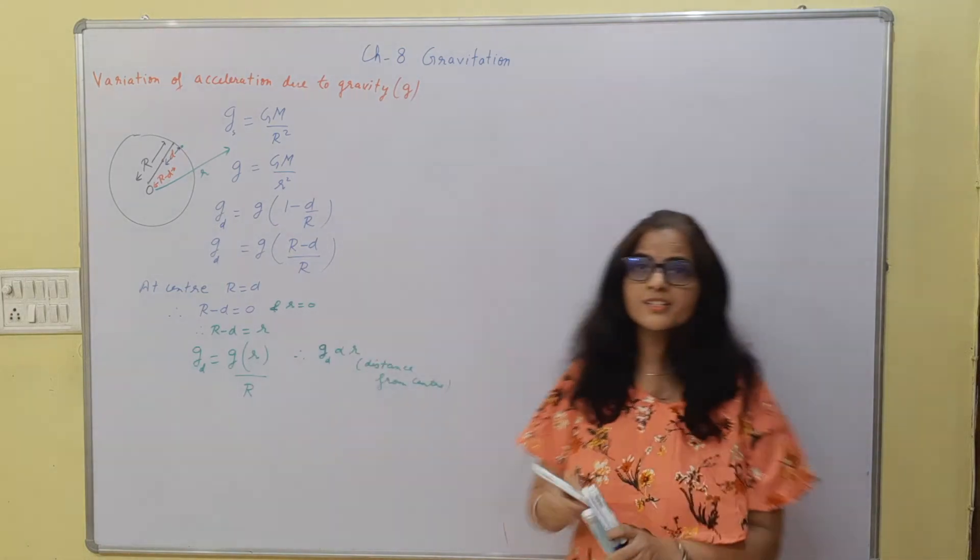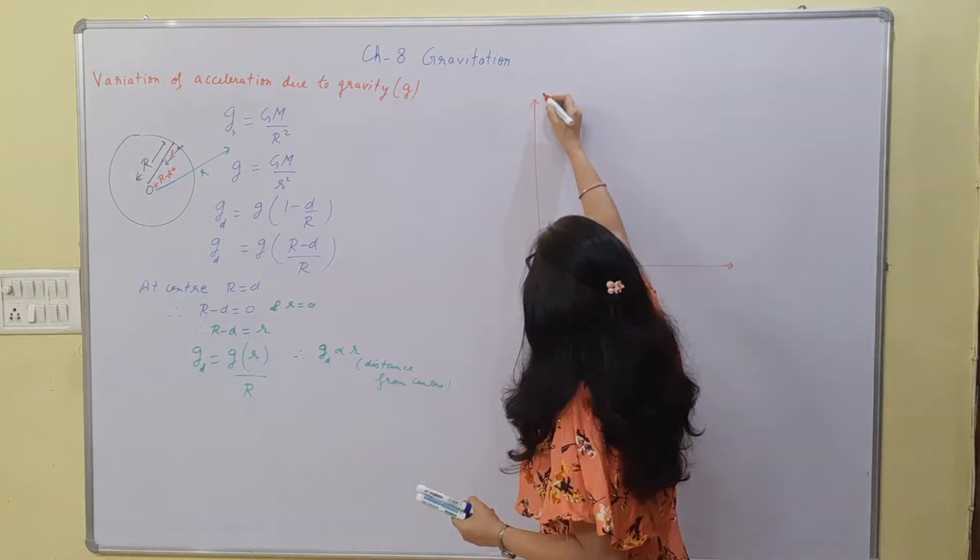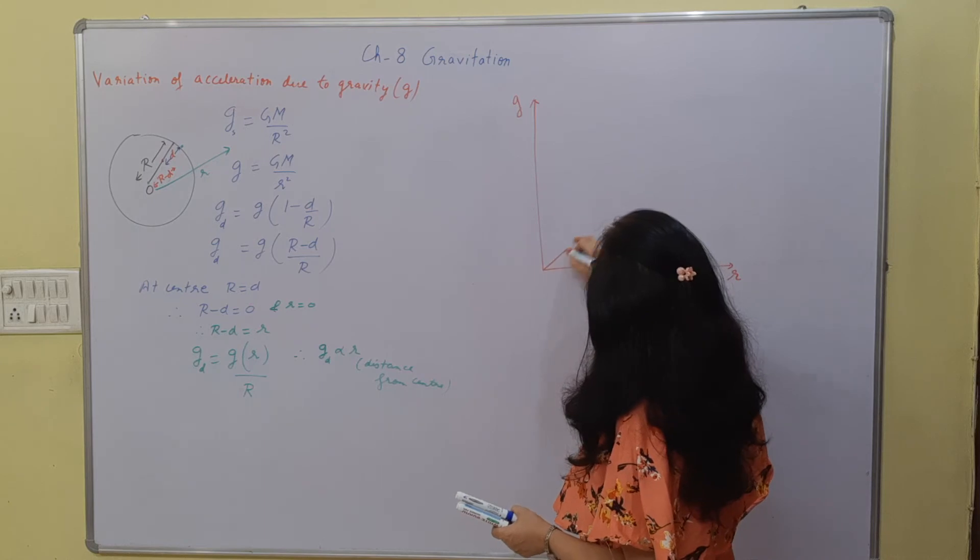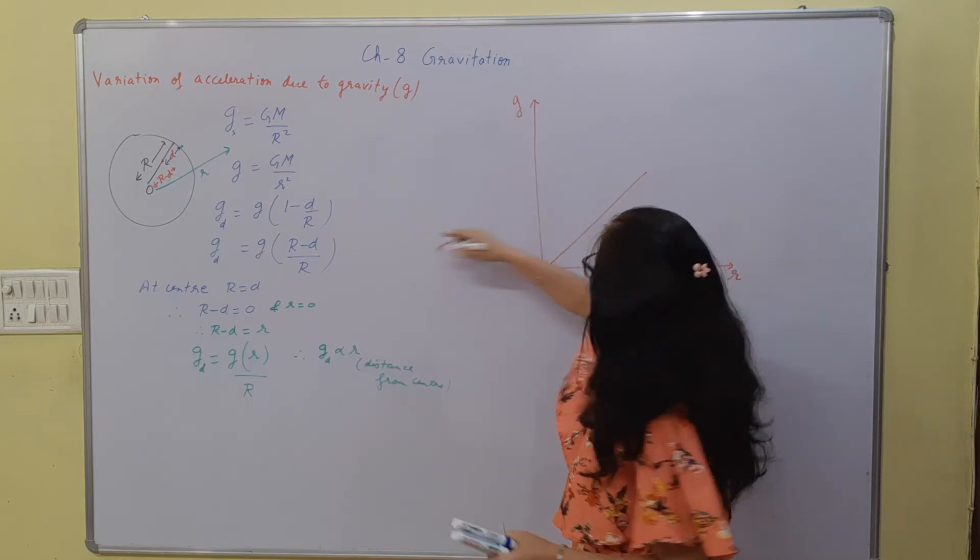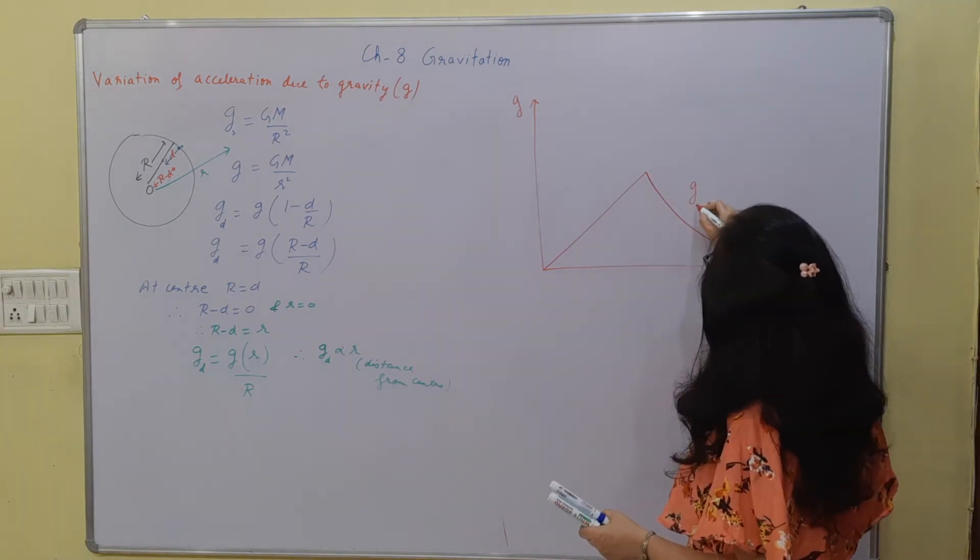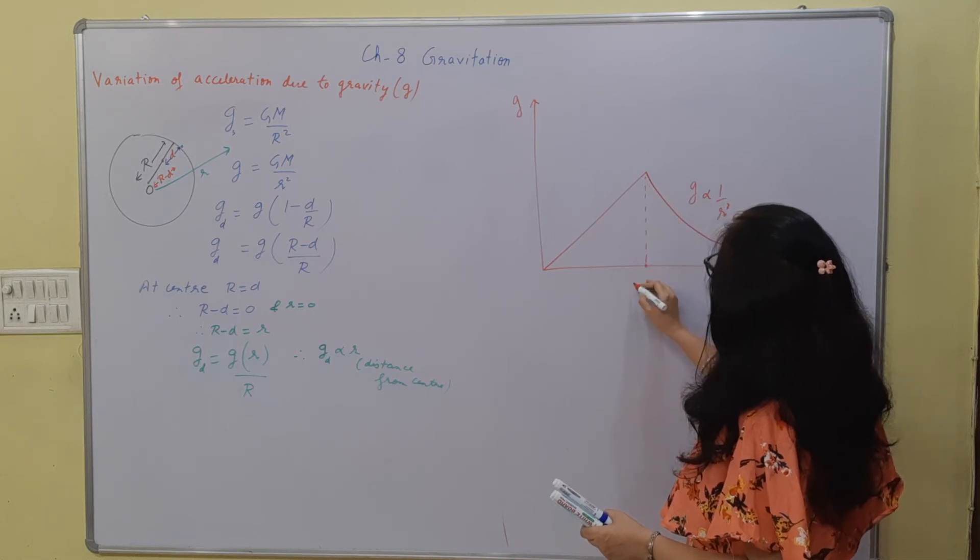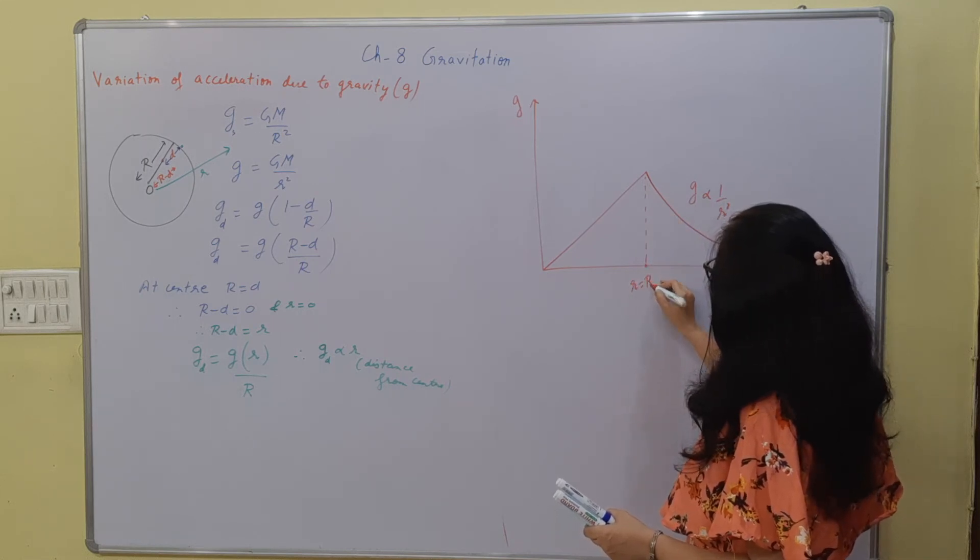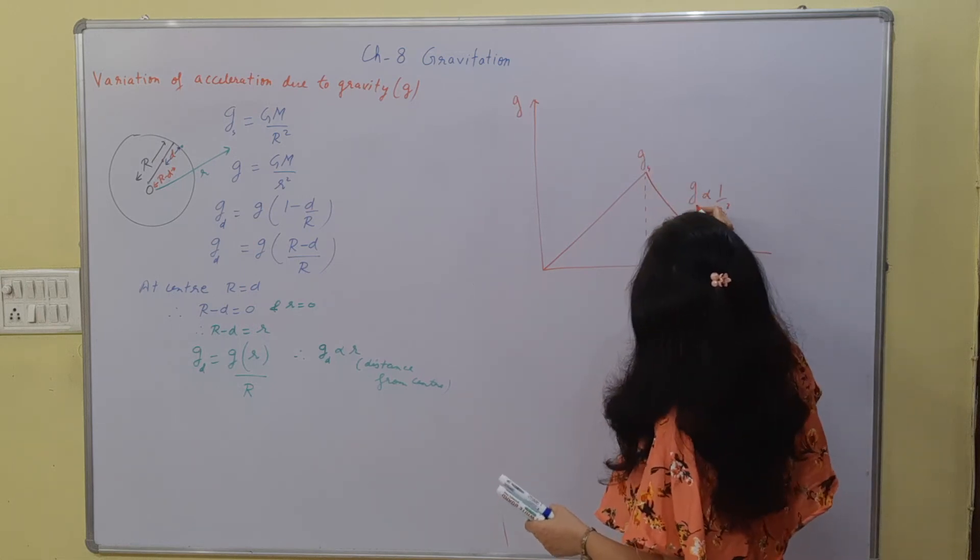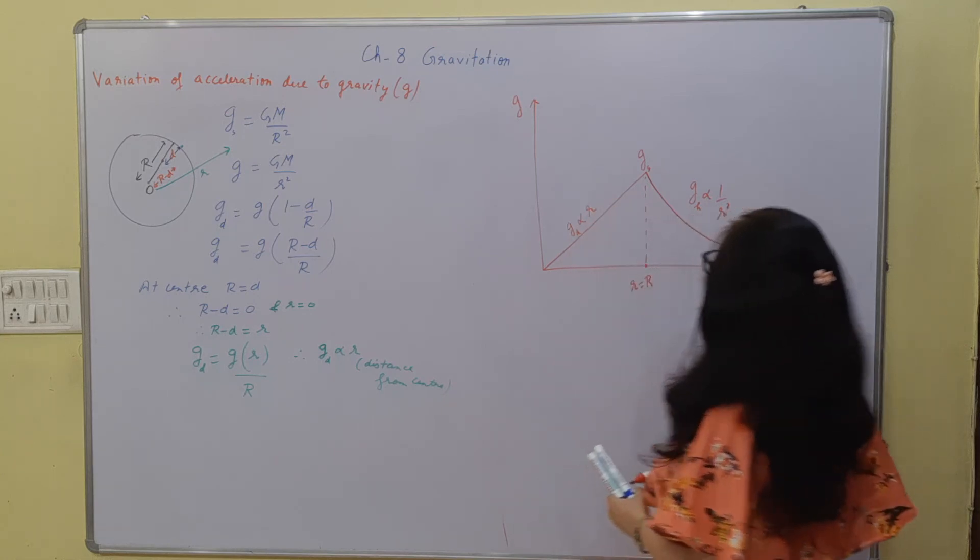From here let's draw the graph. Inside it is directly proportional and outside it is inversely proportional to r square. This is the surface. Here this distance is equal to capital R. So this is g at the surface. And this is height and this is g at depth proportional to small r.